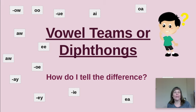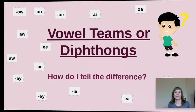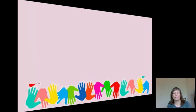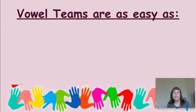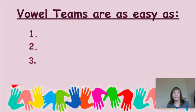Today we're going to talk about how we know the difference between a vowel team and a diphthong. Let's first look at the vowel teams. Vowel teams are as easy as one, two, three, four. What does that mean? I have four vowels that team.